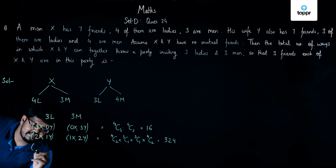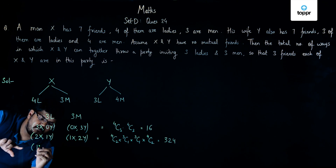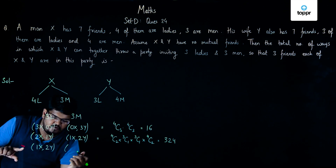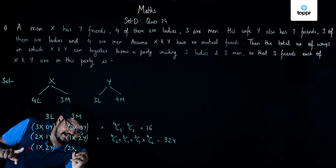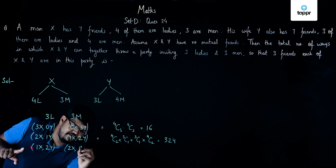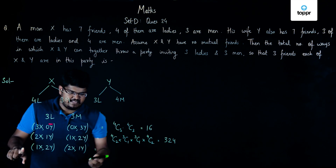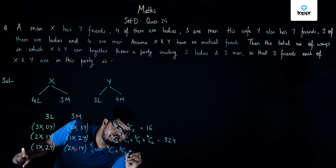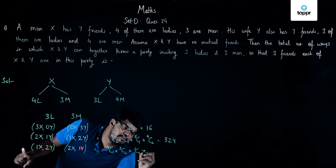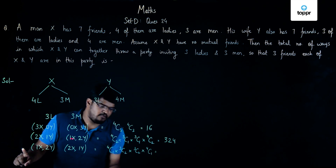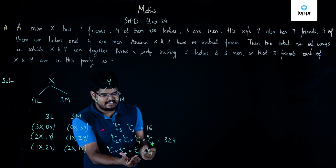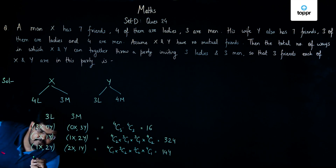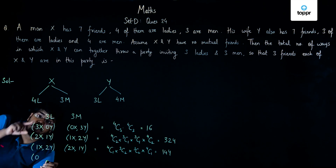For the next case, we take one lady friend of X and two lady friends of Y, and two male friends of X and one male friend of Y. This can be done in 4C1 × 3C2 × 3C2 × 4C1 ways, which equals 4 × 3 × 3 × 4 = 16 × 9 = 144.